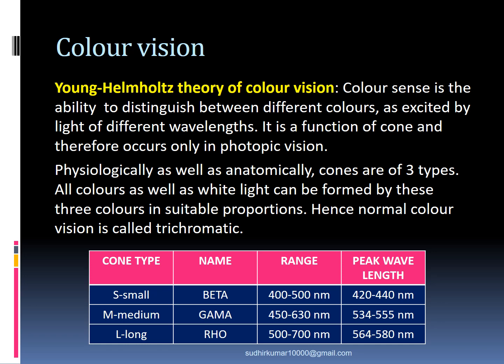There are three types of cones: small, medium, and long, named as beta, gamma, and rho respectively. They can sense different wavelengths. Beta cones can sense a range between 400 to 500 nanometers with a peak wavelength of 420 to 440 nanometers, and so on for the other cone types.